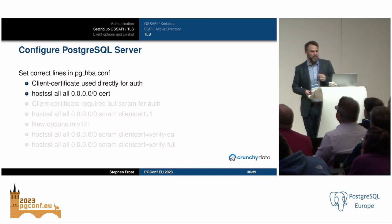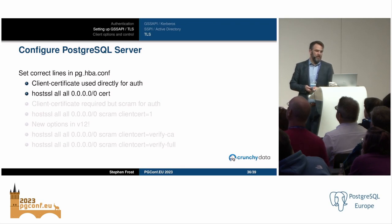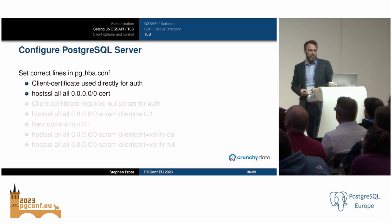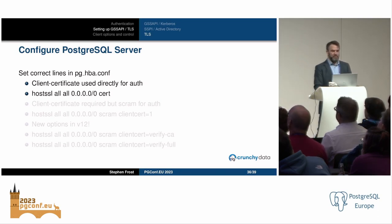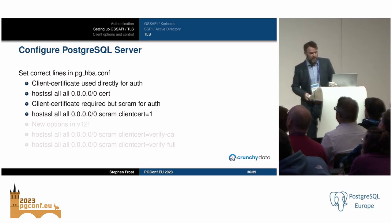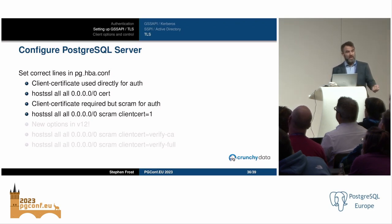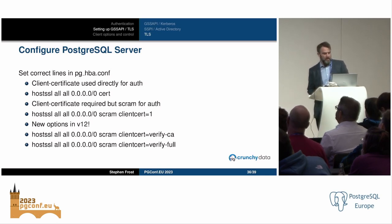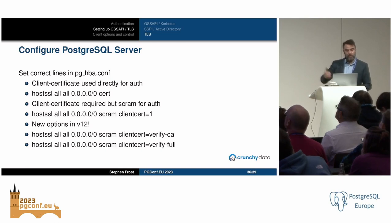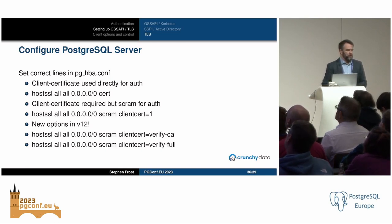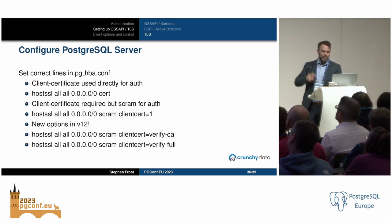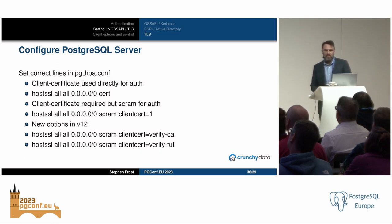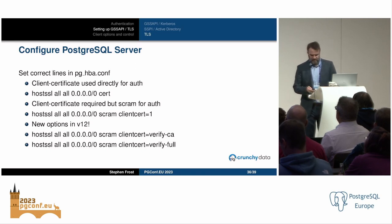When setting up client-side certificate authentication, use hostssl in pg_hba (which only matches SSL encrypted connections) and use 'cert' as the authentication method. You can also do client-side certificates with SCRAM by specifying scram and clientcert=1. There are a couple of new options in PG 12 that are even better — use verify-full to make sure you get full verification that the correct certificate is being presented.